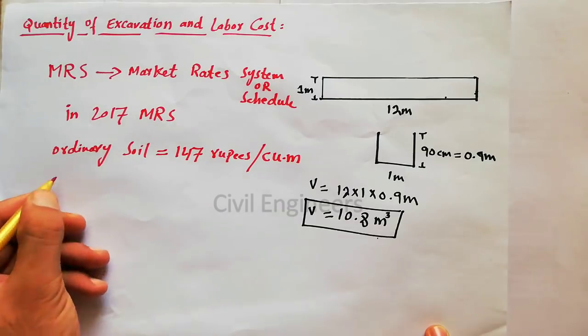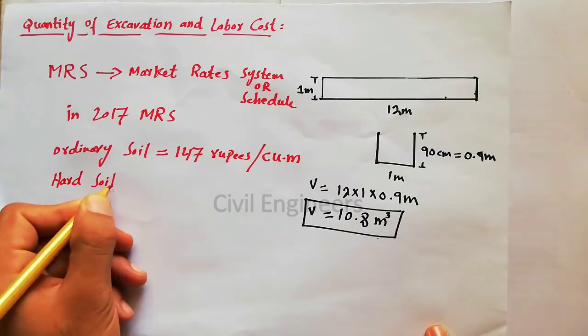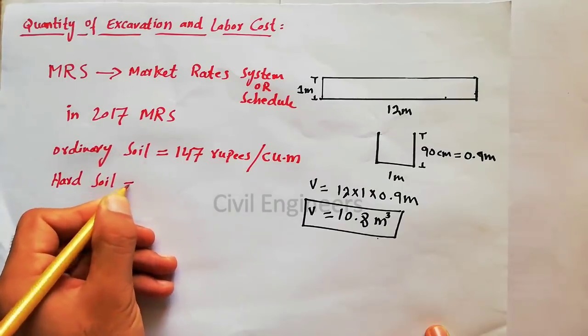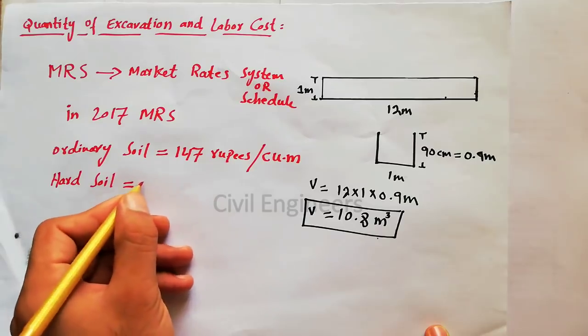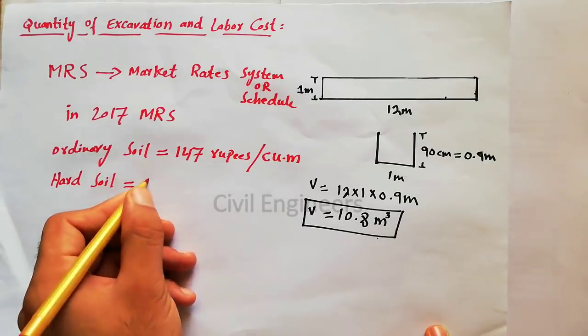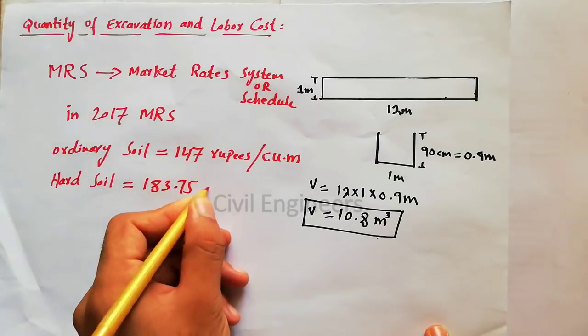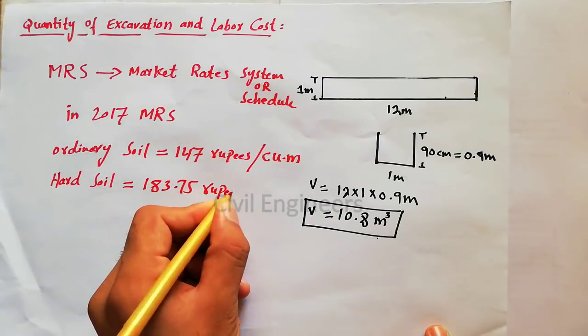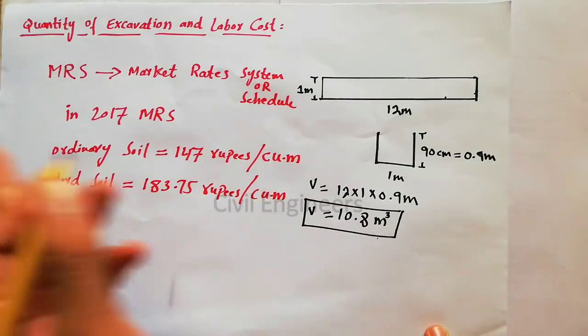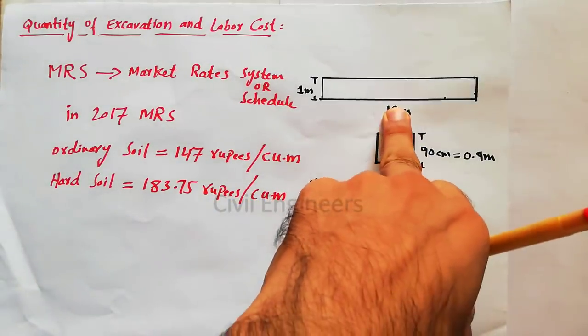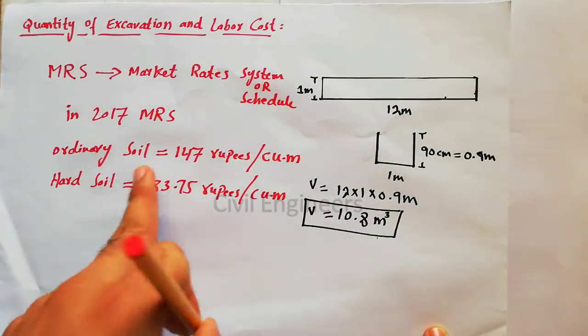So this is Pakistan, therefore in 2017 MRS for ordinary soil, the labor cost for excavation is 147 rupees per cubic meter. And for hard soil, if the soil is hard, it's difficult during excavation, so its price per cubic meter is 183.75 rupees per cubic meter.